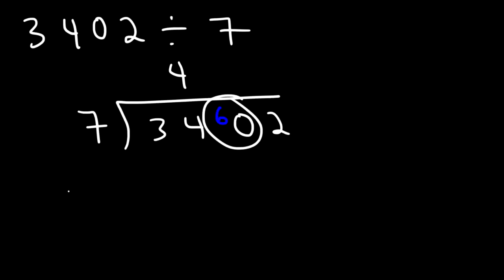7 goes into 42 eight times. 7 times 8 is 56. And 60 minus 56 is 4. Now let's transfer the 4 to the next number. 7 goes into 42 exactly 6 times. And so this is the answer, 486.